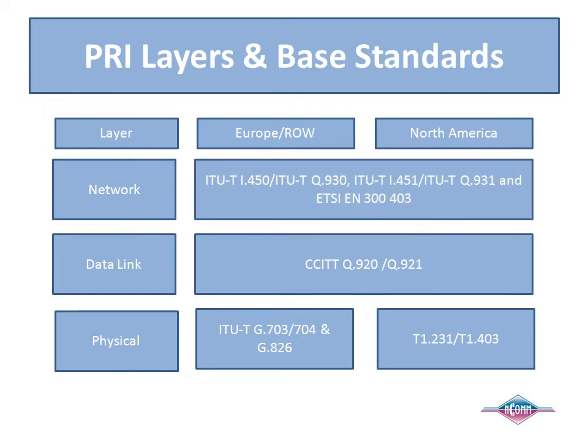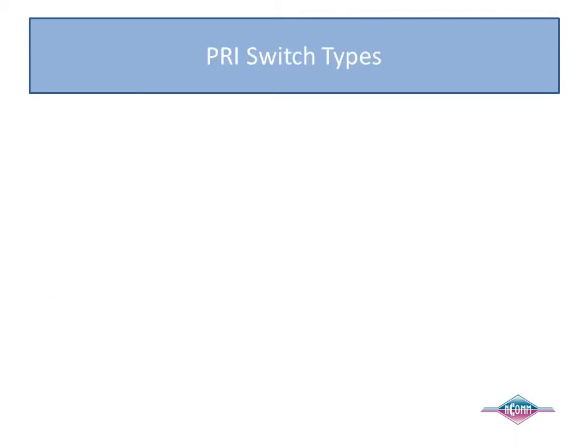It is in Layer 3 that we find more complexity in standards. All Layer 3 standards are derived from I.450, Q.930, I.451, Q.931, and ETSI EN 300-403. The two endpoints of a PRI interface are handled differently as the network-side and user-side, and each has its own set of protocol requirements. The switch type defines the specific protocol, and they can vary by network and the equipment deployed.